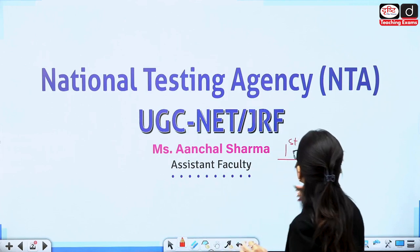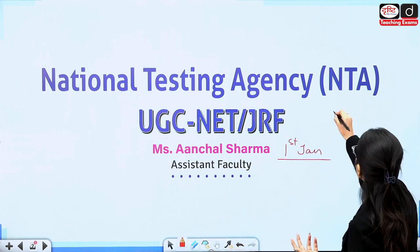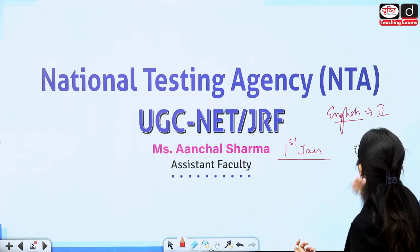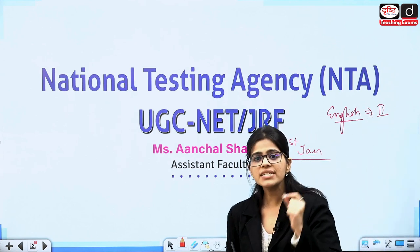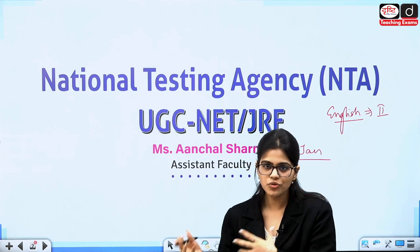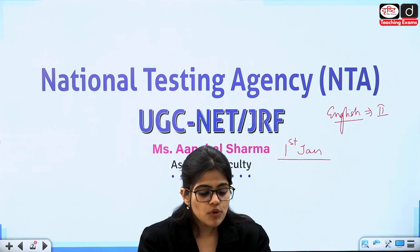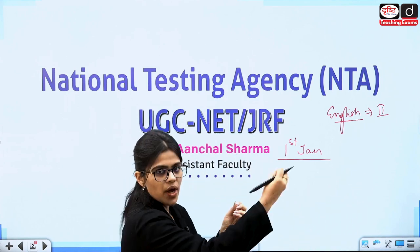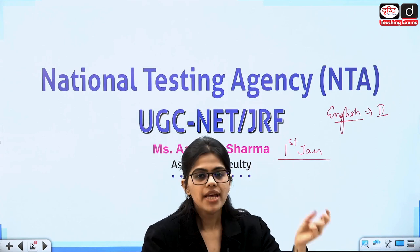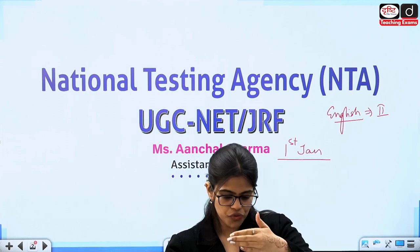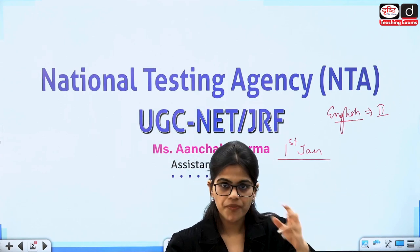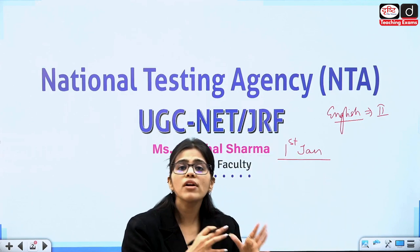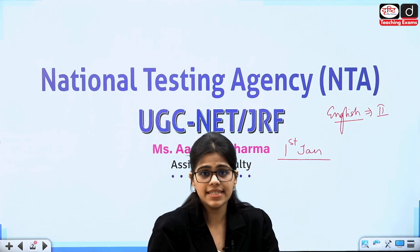Whoever has English literature as Paper 2 — we are talking about Paper 2 — has a syllabus available on the UGC portal and the NTA website. The syllabus has Unit 1 as Drama, Unit 2 as Poetry, Unit 3 as Fiction and Short Stories, and Unit 4 as Non-Fiction. These are the first four units.